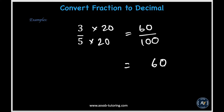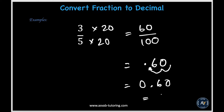Because of the rules of equivalent fractions, whatever we do to the bottom we have to also do to the top. So we're also going to multiply the numerator, which is 3, by 20. We get 60 over 100. There is an invisible decimal point at the end of every whole number, and because there are two zeros after the 1 in the denominator, we move that decimal point two places to the left. Our final decimal ends up being 0.60, which is also 0.6.